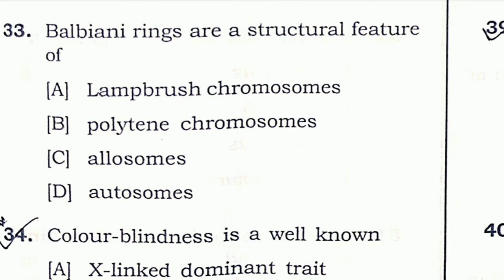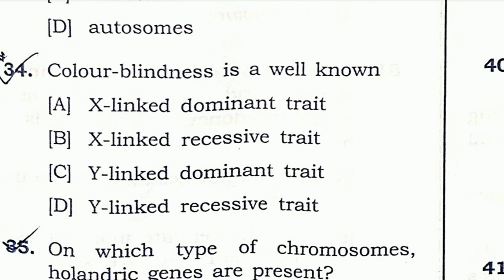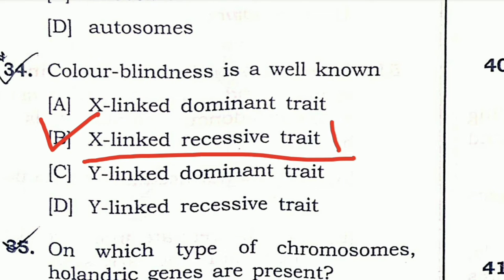Question 33: Balbiani rings are a structural feature of polytene chromosomes. Question 34: Color blindness is a well-known X-linked dominant trait — the right answer is option B: X-linked recessive trait.